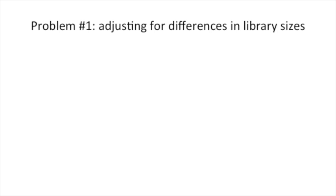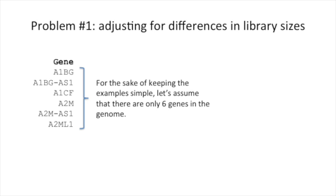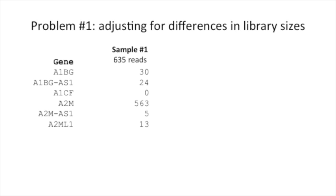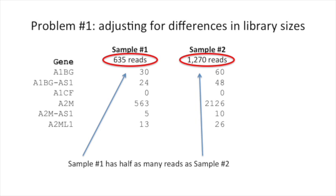Problem number one: adjusting for differences in library sizes. For the sake of keeping the example simple, let's assume there are only six genes in the genome. Here we have sample number one, which has a total of 635 reads mapped to it, and here we see how the reads are distributed among the six genes. Sample number two has 1,270 reads mapping to it, and we see how those reads are distributed among the genes in the genome.